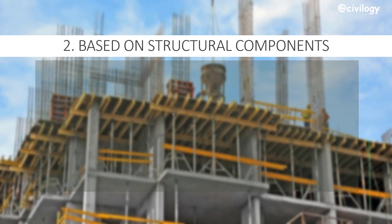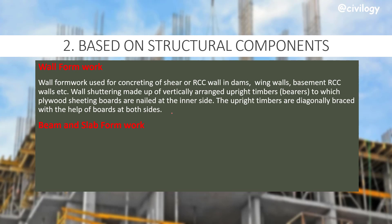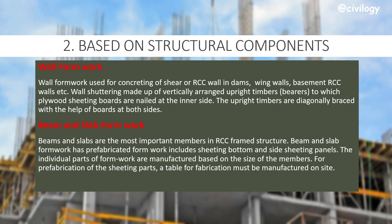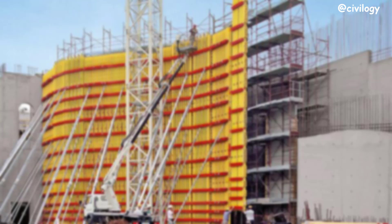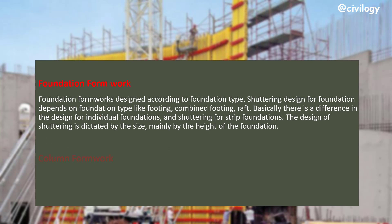Based on structural components, we have wall formwork and beam and slab formwork. Wall formwork is used for concreting shear or RCC walls in dams, wing walls, and basements. Beam and slab formwork are the most important members in RCC framed structures and include prefabricated formwork with sheeting, bottom panels, and side panel sheets.